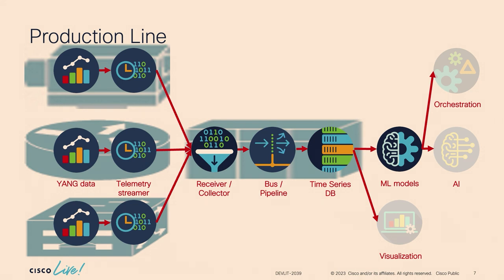We typically have a production line that looks like this: a source of data — mostly numerical — then some process for telemetry or data streaming to collection points at different network locations, then we send the data on a bus to time series databases where it's continuously received and stored, and then machine learning models continuously work on this data, consuming it and making sense of it. Beefing up this pipeline from the start with sufficient resources minimizes interruptions or data loss, and having redundancy maintains quality and continuity.